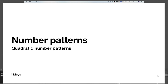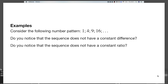Today we will look at quadratic number patterns. Previously we dealt with number patterns with a constant difference and also number patterns with a constant ratio. But with a sequence like 1, 4, 9, 16, and so on, if you work out the constant difference you will not get the same answer — you won't get a constant difference.